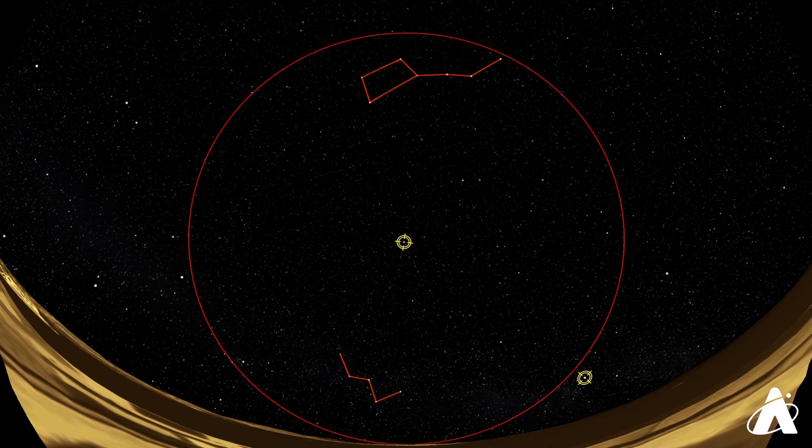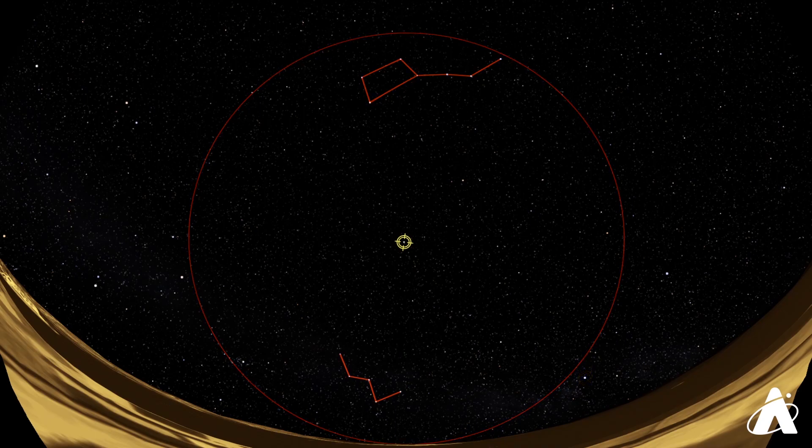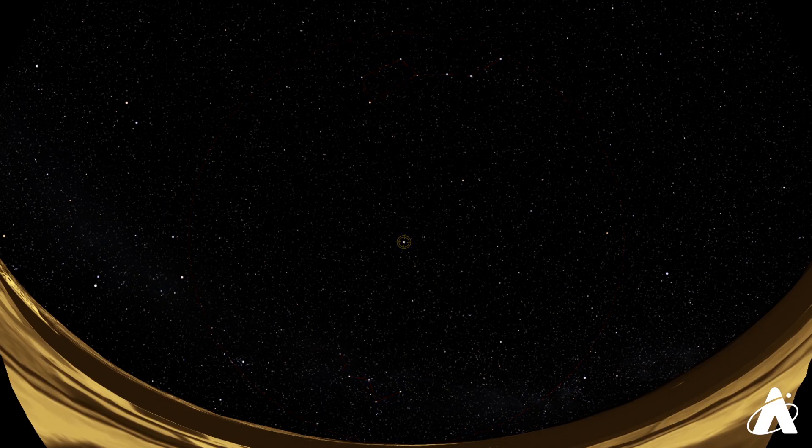So this northern part of the sky, really encourage you to get out there and check it out. All sorts of things to see, even from Chicago. Once again, using that Big Dipper, pointing with those pointer stars down to the north star and then through to Cassiopeia.